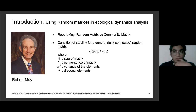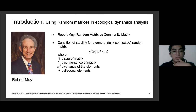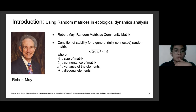If N is very large — for example 10,000 species — it becomes difficult to note each interaction. The genius Robert May proposed using random matrices as the community matrix. He found that the condition for stability of a generally fully connected random matrix involves size N, the connectivity, and the variance of the matrix elements. This means stability is related to the complexity of the network: more species, more interactions, and higher variance all lead to greater instability.